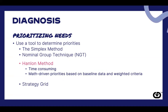The Hanlon method is more time consuming, but it uses mathematical calculations to prioritize actions based on baseline data and weighted criteria. Different criteria being assessed get different weights that are put into mathematical calculations, and then priorities are driven based on those calculations.